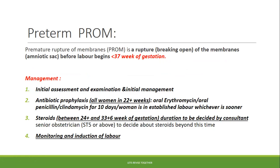Preterm premature rupture of membranes (pPROM) is rupture of membranes before 37 weeks of gestation. Management involves initial stabilisation, assessment, and antibiotic prophylaxis. Since the patient is allergic to penicillin, erythromycin is the alternative. If erythromycin is also contraindicated, clindamycin is used for 10 days or until labour, whichever is sooner. Steroids are given between 24+0 and 33+6 weeks; the duration is decided by a consultant at ST5 or above.